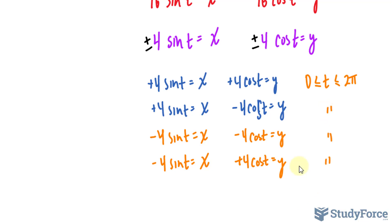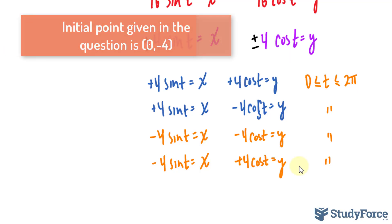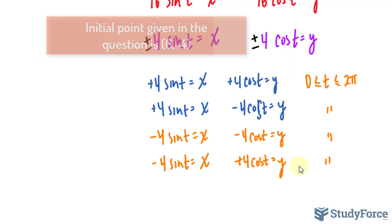There's one last step, which is to determine which of the four parametric representations is correct. We must look at the initial point, and we must consider the orientation. The way we do this is, remember that the y coordinate of the initial point is negative 4, which is a negative number.